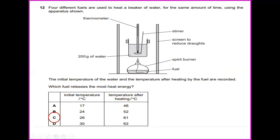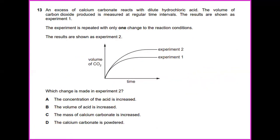An excess of calcium carbonate reacts with dilute hydrochloric acid. The volume of carbon dioxide produced is measured at regular time intervals. The results are shown as experiment 1. The experiment is repeated with only one change to the reaction conditions. The results are shown as experiment 2, where experiment 2 produces more carbon dioxide than experiment 1. Which change is made in experiment 2? We can see that the volume of acid increases. When the volume of acid increases, it leads to more carbon dioxide release.